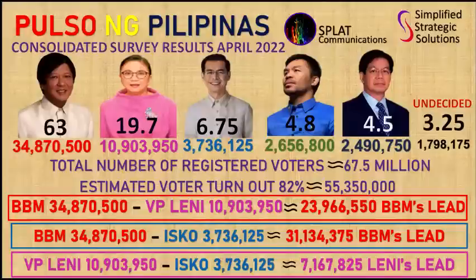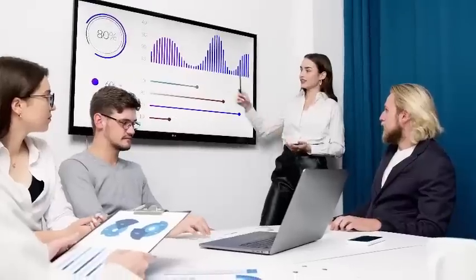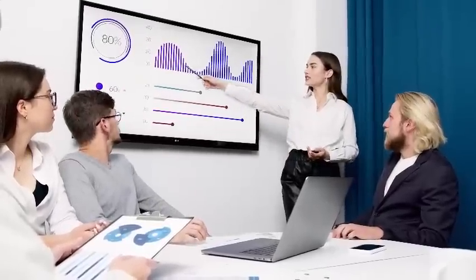Now to compute for the possible vote leads of the first-ranked presidential candidate: former Senator Ferdinand Marcos Jr. leads VP Lenny Robredo with 23,966,550 votes — nearly 24,000,000 votes — which is more than double her own estimated votes. Even if her estimated votes are doubled, she still loses by around 13,000,000 votes. Even if VP Lenny's votes are tripled, she still loses by approximately 2.1 million votes.